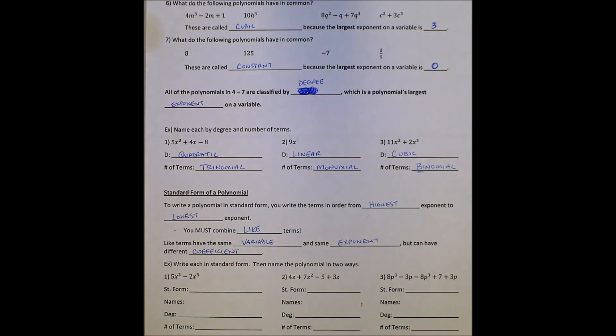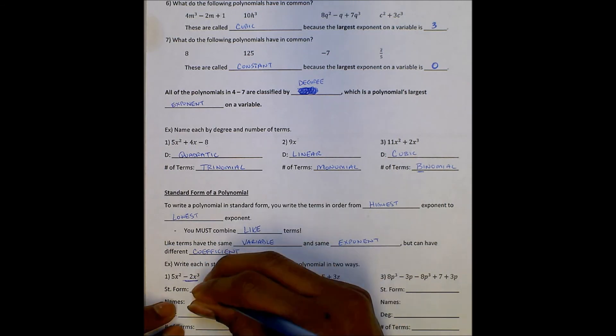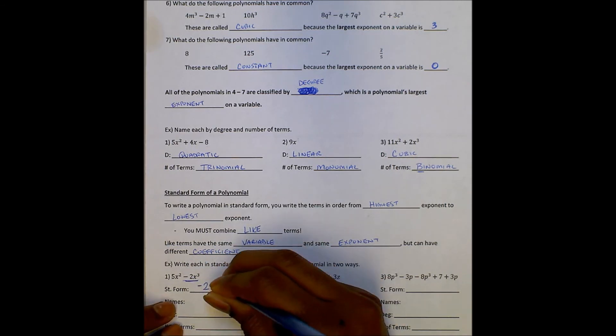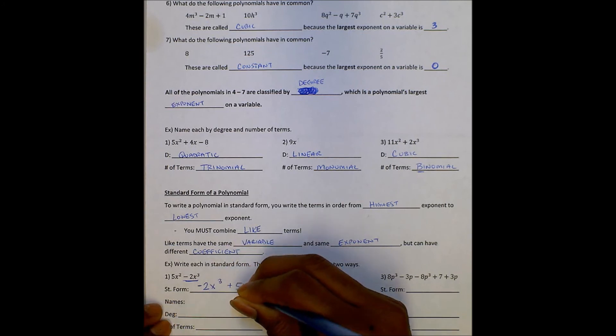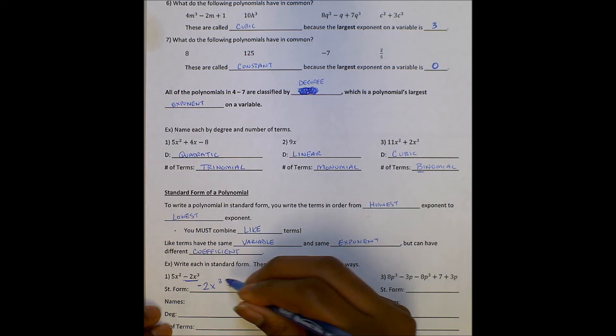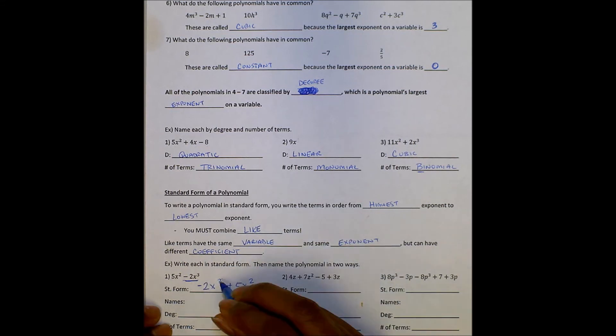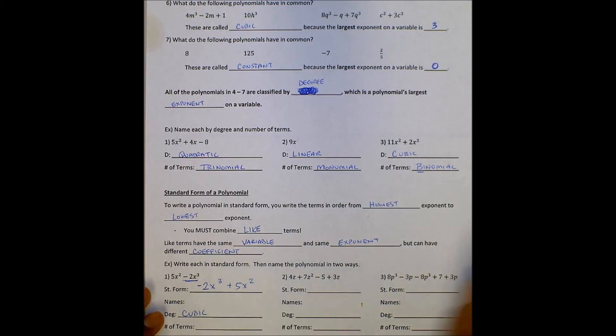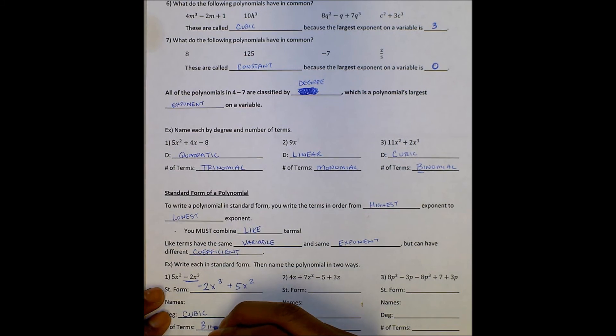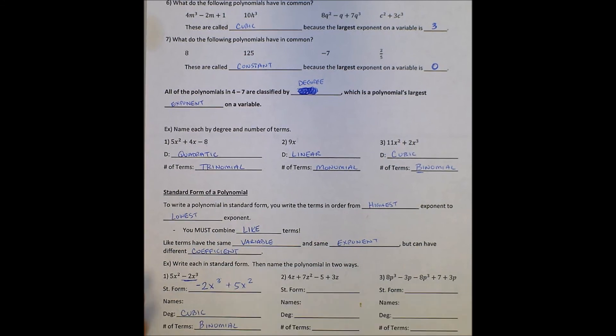It says write each in standard form, then name the polynomial in two ways. I'm going to do the first and last one with you. I'm going to have you do number two on your own and bring that to class. So first, writing this in standard form. Remember, standard form goes at the highest exponent should go first. This has the highest exponent. It's negative, so I need to make sure I bring the negative sign with me. Plus five x squared. So this is standard form, highest exponent to lowest exponent. The name's based off a degree. It's a third degree, so I'm going to call it cubic. There are two terms, so I call it binomial.